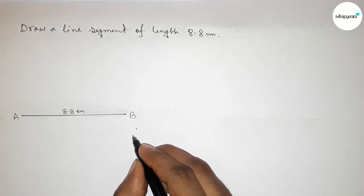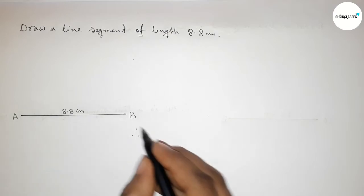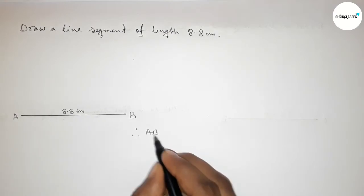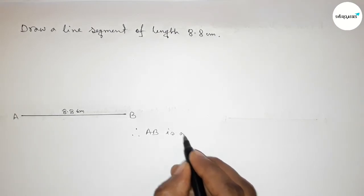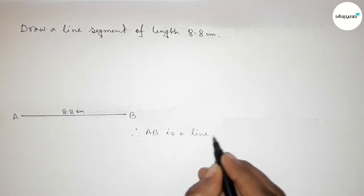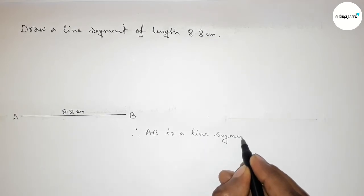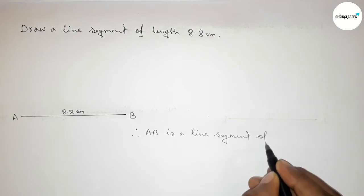So now therefore here we can say that AB is a line segment of length 8.8 centimeters, and with the help of a scale you can draw this line by this way.